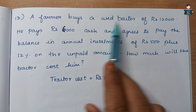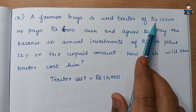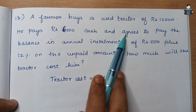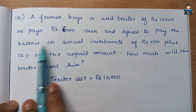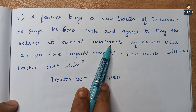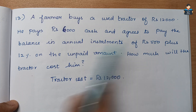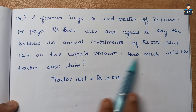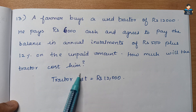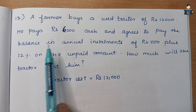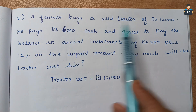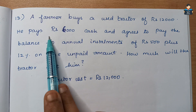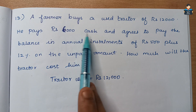Question number 13: A farmer buys a used tractor for rupees 12,000. He pays rupees 6,000 cash and agrees to pay the balance in annual installments of rupees 500 plus 12% on the unpaid amount. We need to find the total cost of the tractor.